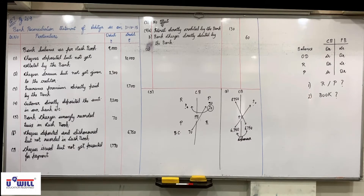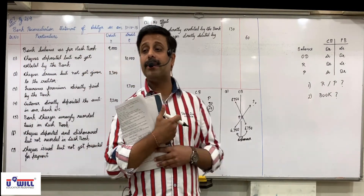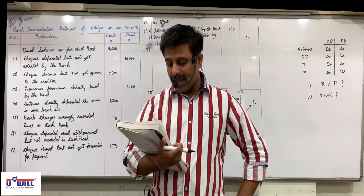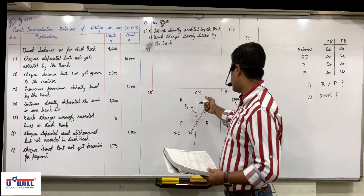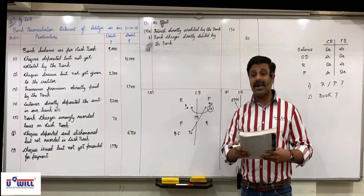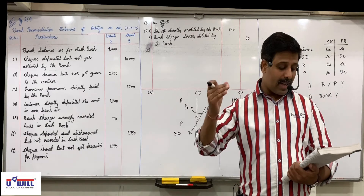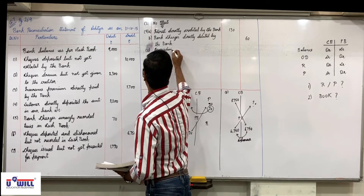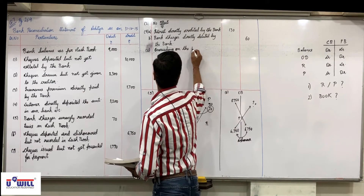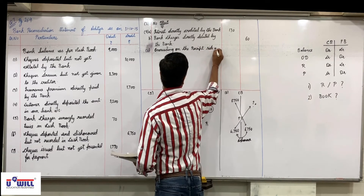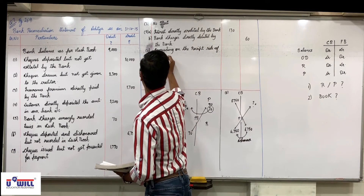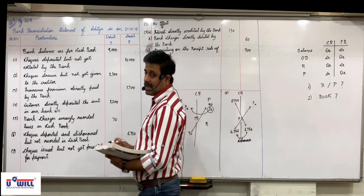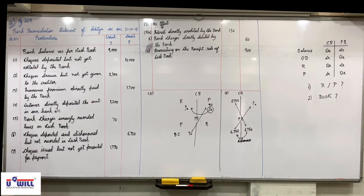Total of receipt side of cashbook is overcast by rupees 900. Receipt side of cashbook is the debit side. Overcast means we write on the opposite side to rectify. So 900 will be written on the credit side. Tenth reason: overcasting on the receipt side of cashbook. Undercasting — write on the same side. Overcasting — write on the opposite side.